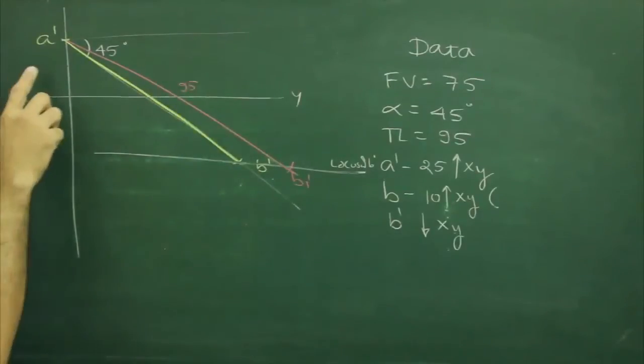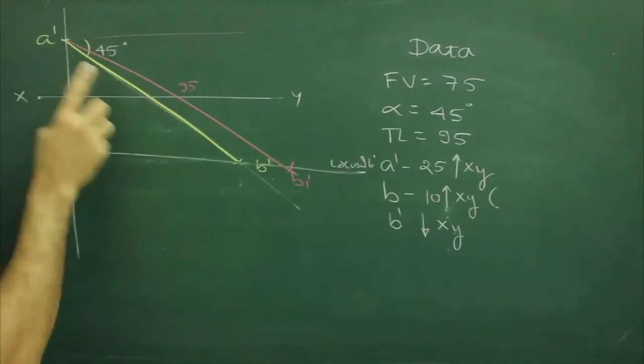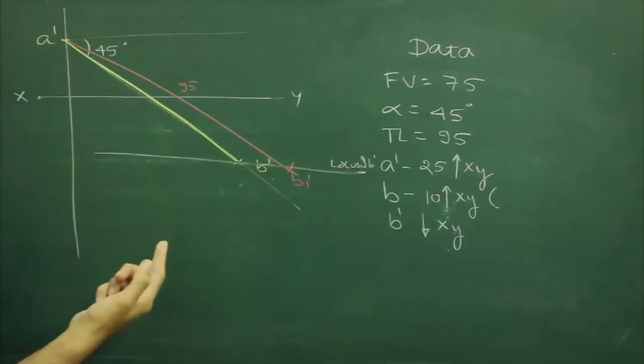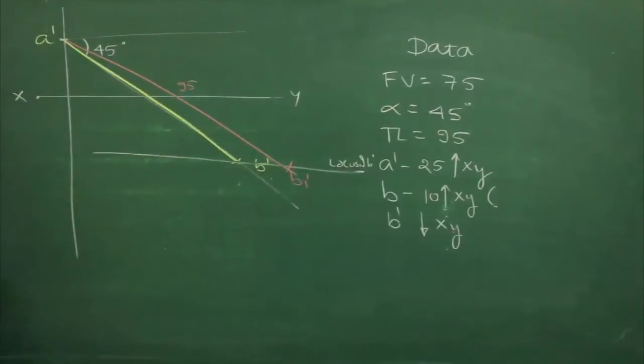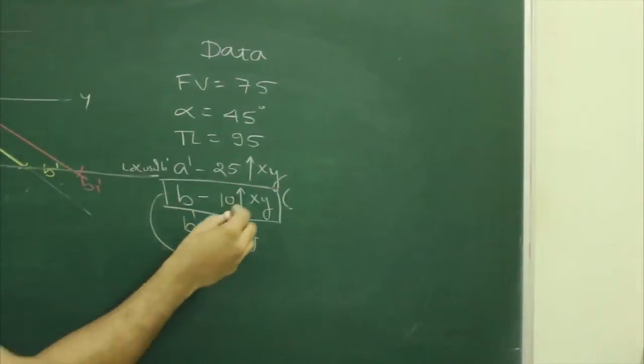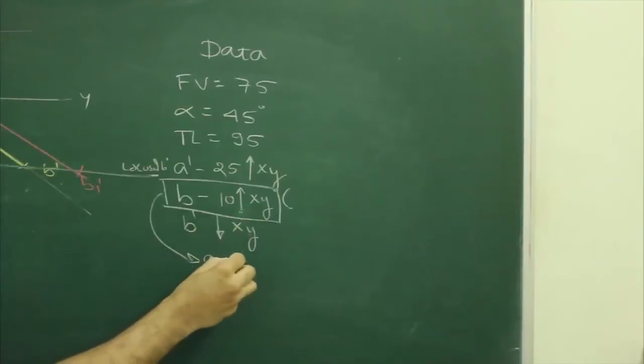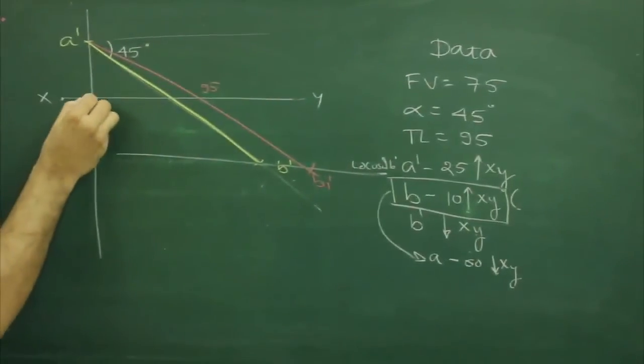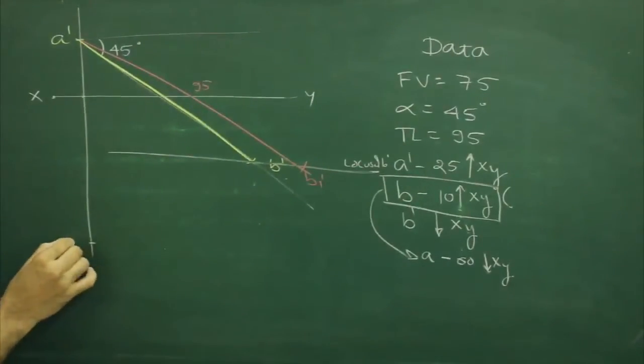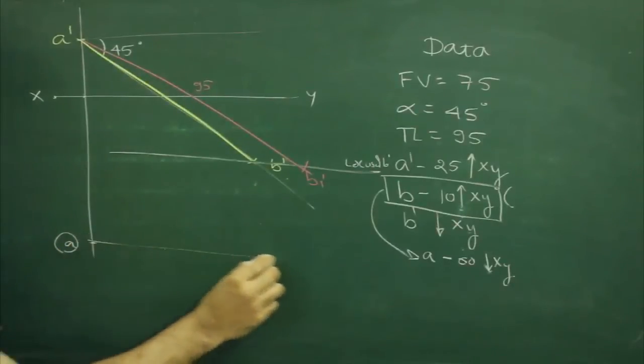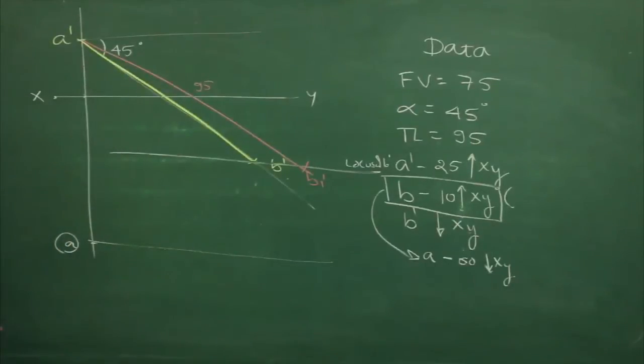Now if you see, we have A'B', A'B'. Now we have B' so what we will do, we will assume instead of B above 10M above XY, we will assume A 60M below XY. So what we will do from XY, we will take 60M down, we will assume A, we will draw horizontal line, we will follow the same method.